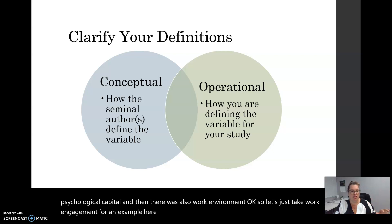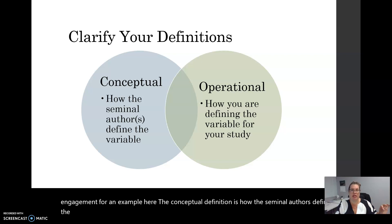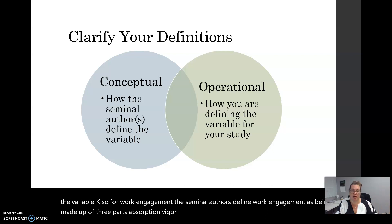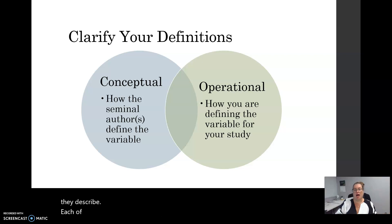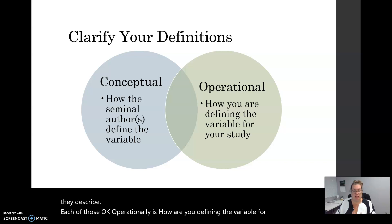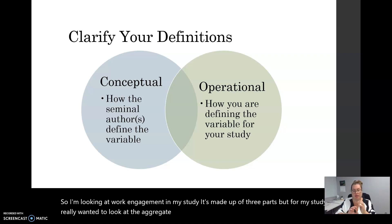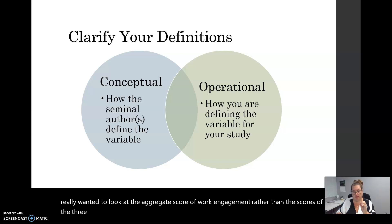The conceptual definition is how the seminal authors define the variable. For work engagement, the seminal authors define it as being made up of three parts: absorption, vigor, and dedication, and they describe each of those. Operationally is how you are defining the variable for your study. I was looking at work engagement in my study — it's made up of three parts, but I really wanted to look at the aggregate score of work engagement rather than the scores of the three subconstructs.